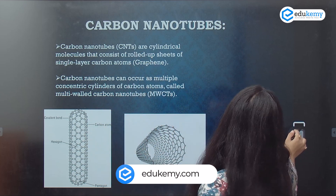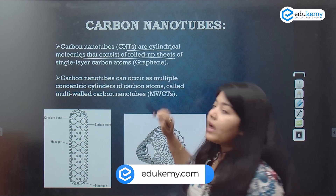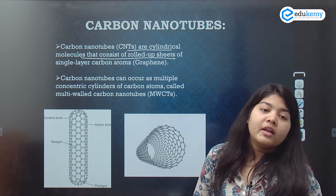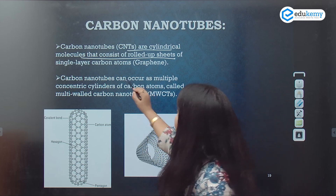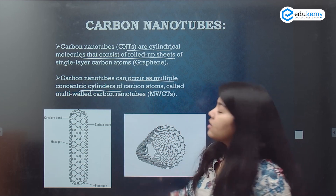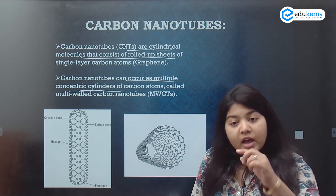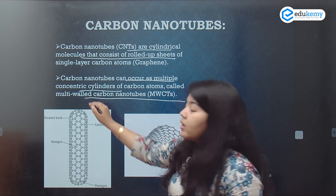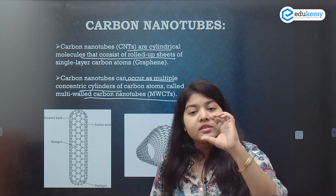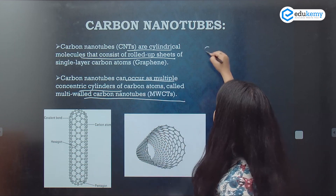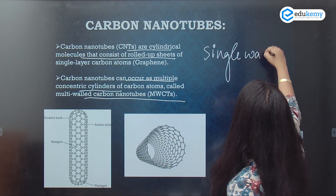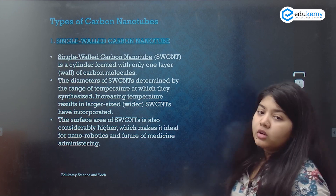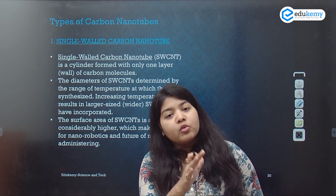Carbon nanotubes are cylindrical molecules that consist of rolled-up sheets of single-layer carbon atoms. They can occur as multiple concentric circles — if they are multiple, they are called multi-walled. If they are a single layer, they are called single-walled carbon nanotubes.